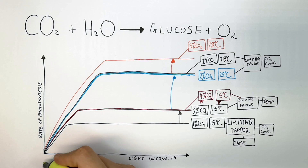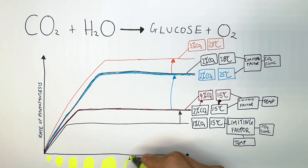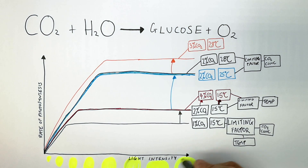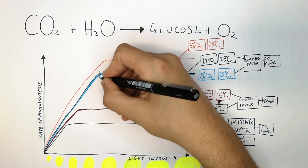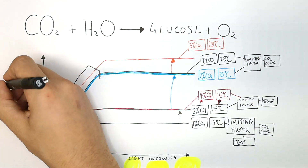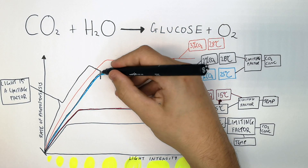As we increase the light intensity along the x-axis, the rate of reaction for photosynthesis goes up until the graph levels off. On the gradient being drawn here, light is the limiting factor because as you increase the light intensity, the rate of reaction can still go up until it levels off. So light is a limiting factor.